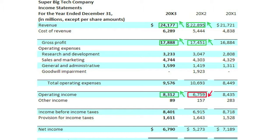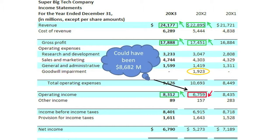If you said that the major cause of the decline was a $1,923,000,000 goodwill impairment in 20x2, you would be right. Had such goodwill impairment not been recognized in 20x2, its operating income would have actually increased from $8,435,000,000 in 20x1 up to a revised $8,682,000,000 in 20x2, rather than decreased. You probably also noticed that SBTC recognized no goodwill impairments in 20x1 or in 20x3. Why did it only record a goodwill impairment in 20x2?